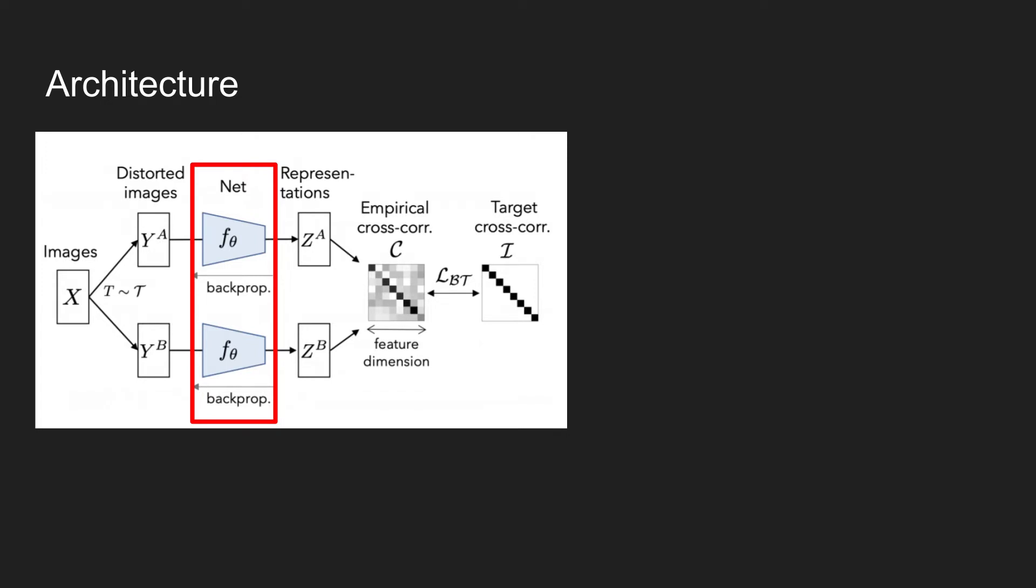To these networks, a batch of images is taken and two different transformations are applied. These transformations are sampled from the data augmentation techniques used in the training procedure. The input image, denoted as X, is applied a transformation T.